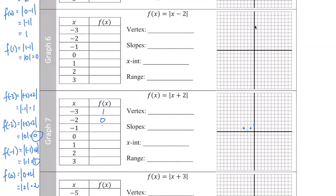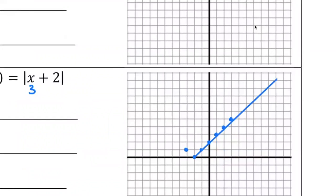Writing down the values: two is plotted here. F of one: absolute value of one plus two is the absolute value of three, so that's three. You can see the V-shape coming up already. F of two: absolute value of two plus two is four, so the point is two comma four. F of three: absolute value of three plus two is five, so three comma five. The V-shaped graph is very clear.